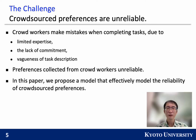The downside of using crowdsourcing is that the crowd workers make mistakes. They make mistakes because of limited expertise, the lack of commitment, and the vagueness of task description. So the crowdsource preferences are full of noise and unreliable. In this paper, we propose a model that effectively handles the reliability of crowdsource preferences.